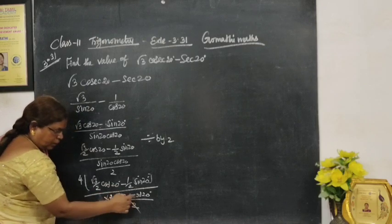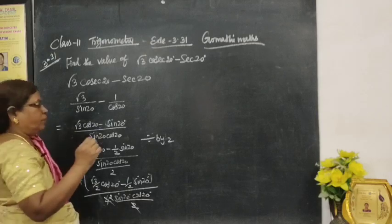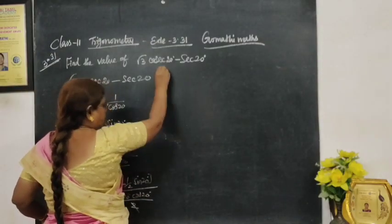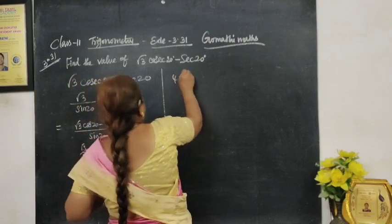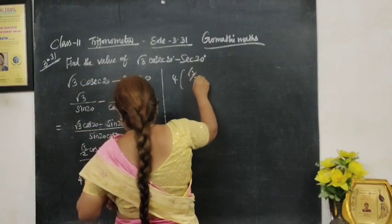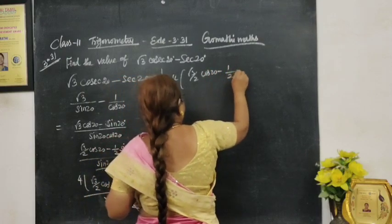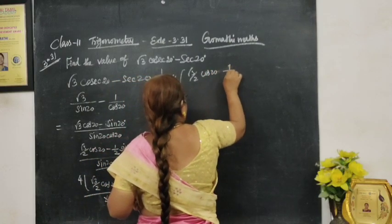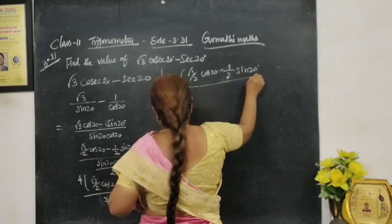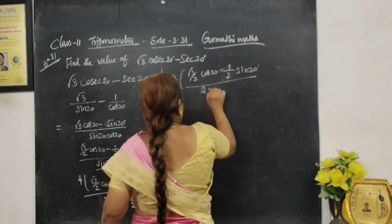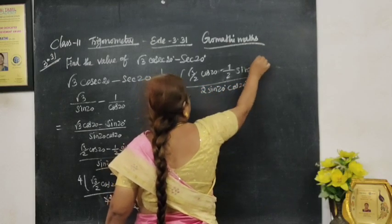You can write the value of 2 sin 20° cos 20° divided by 2 to apply. For that purpose only we will do this. So in this case, 4[(√3/2) cos 20° - (1/2) sin 20°] / [2 sin 20° cos 20°].